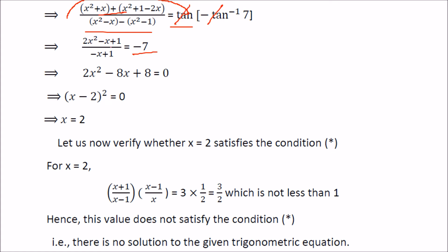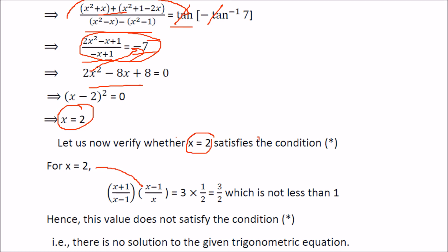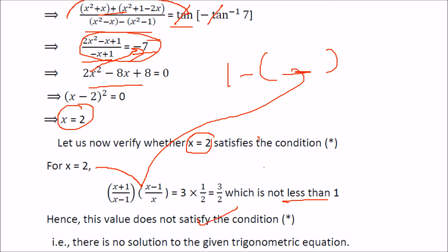Solving gives 2x² minus x plus 1 over (minus x plus 1). Rearranging and solving the quadratic equation gives x equals 2. However, we verify whether x equals 2 satisfies the original condition: the content should be less than 1, but we get 3 by 2, which is not less than 1. So this does not satisfy the condition, and there is no solution to the trigonometric equation.